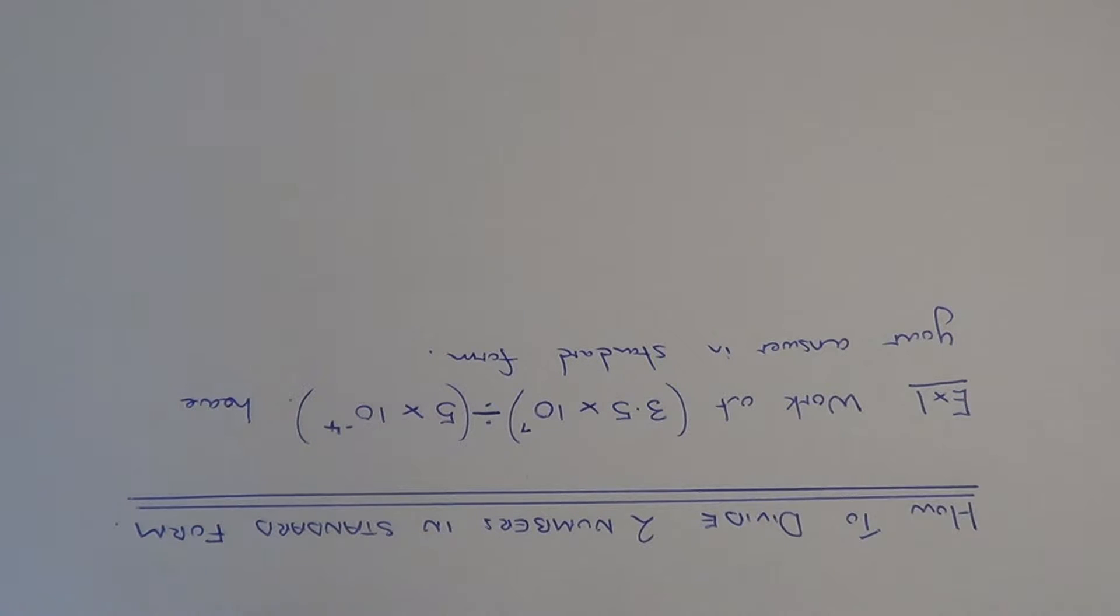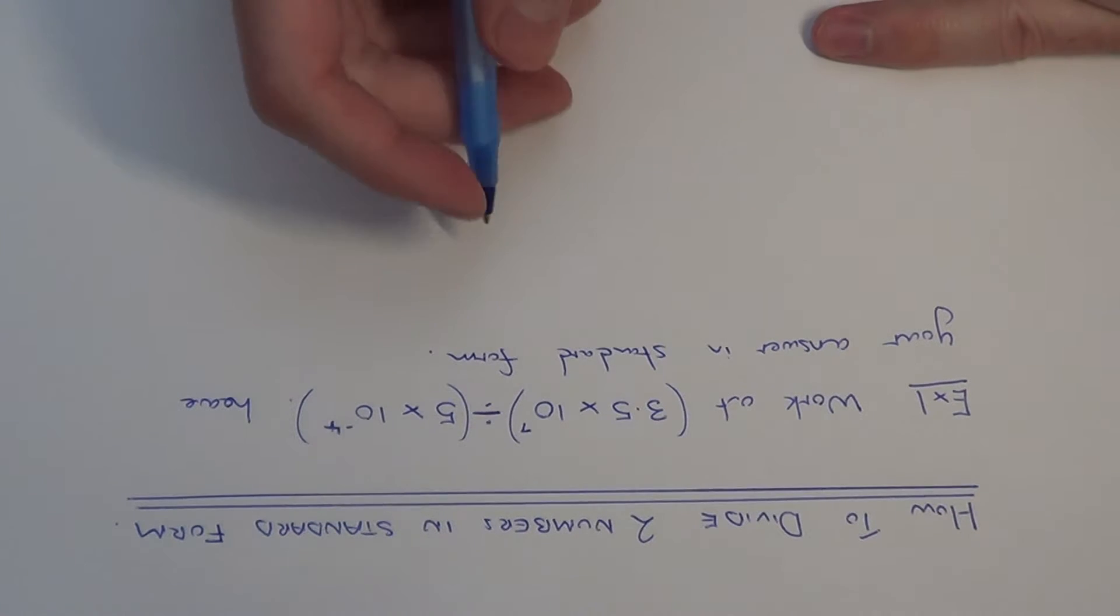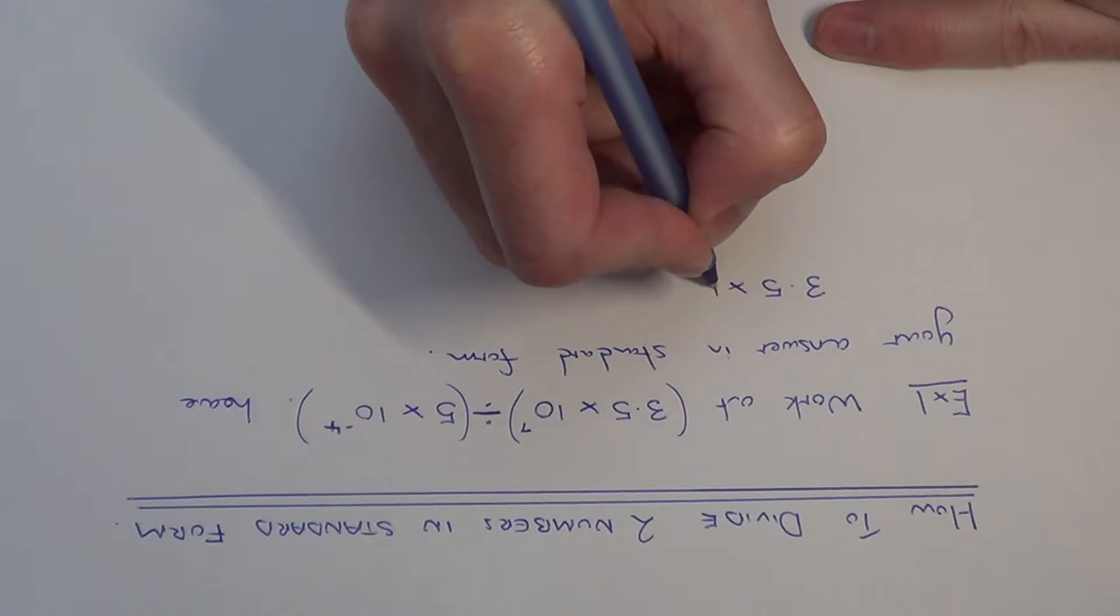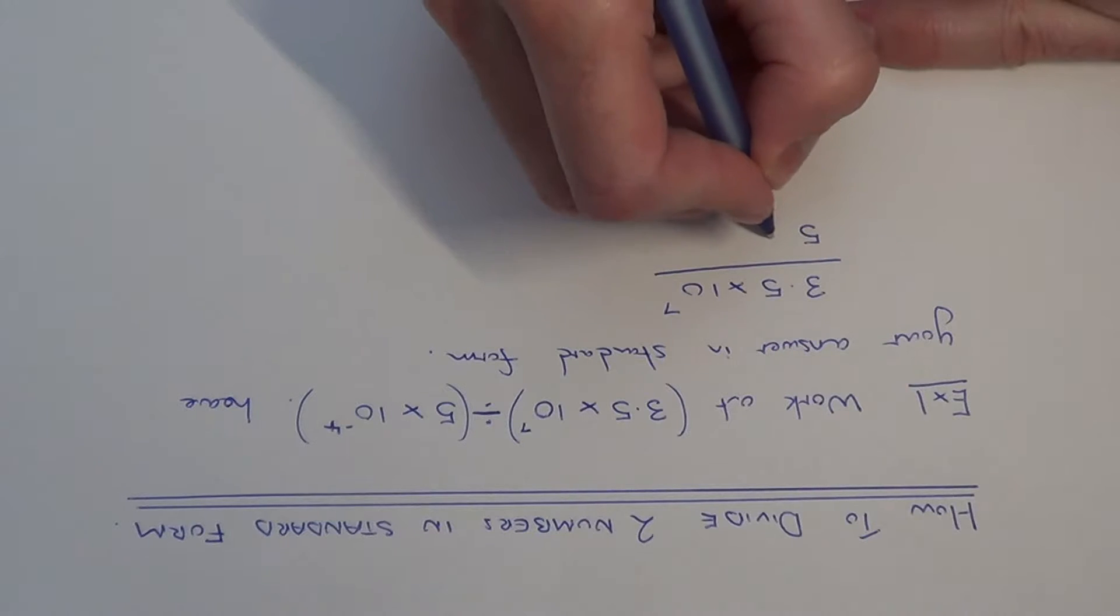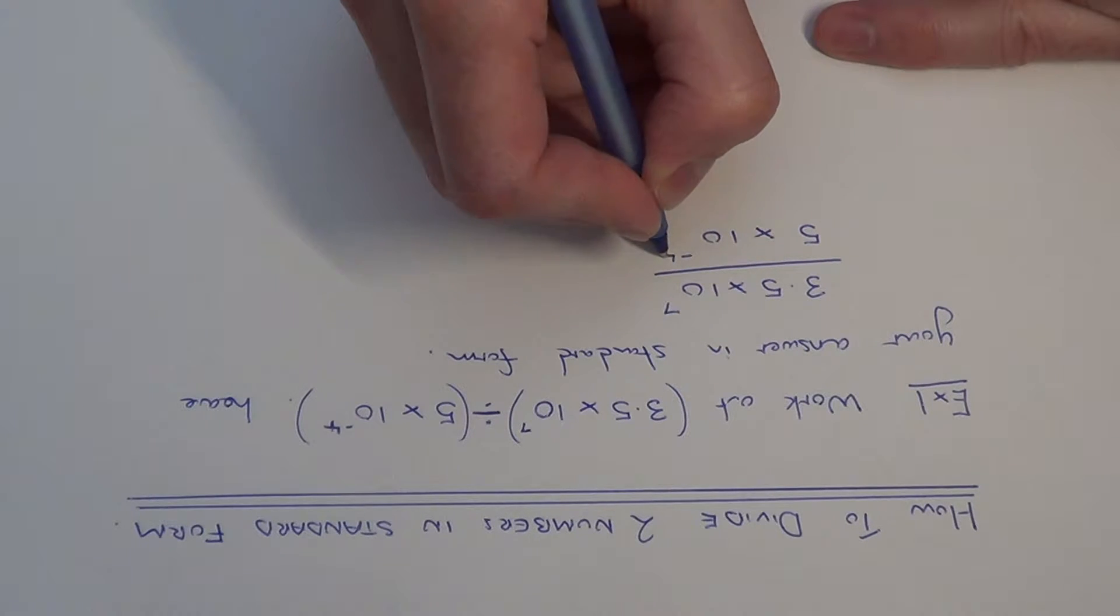Today I'm going to show you how to divide two numbers written in standard index form and we need to leave the answer in standard index form. So in the example here we've got 3.5 times 10 to the power of 7, and we're dividing that by 5 times 10 to the minus 4.